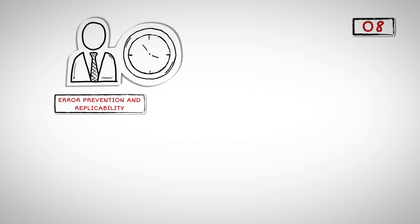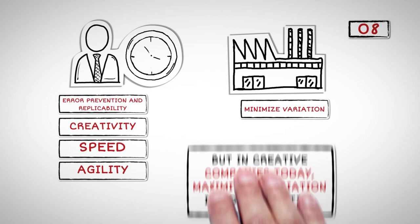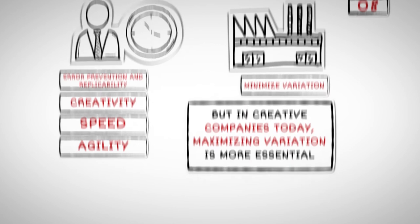Number eight. In today's information age, in many companies and on many teams, the objective is no longer error prevention and replicability. On the contrary, it's creativity, speed, and agility. In the industrial era, the goal was to minimize variation. But in creative companies today, maximizing variation is more essential.